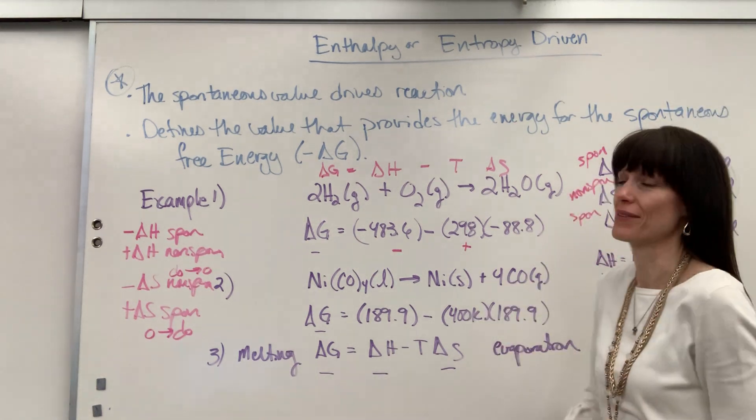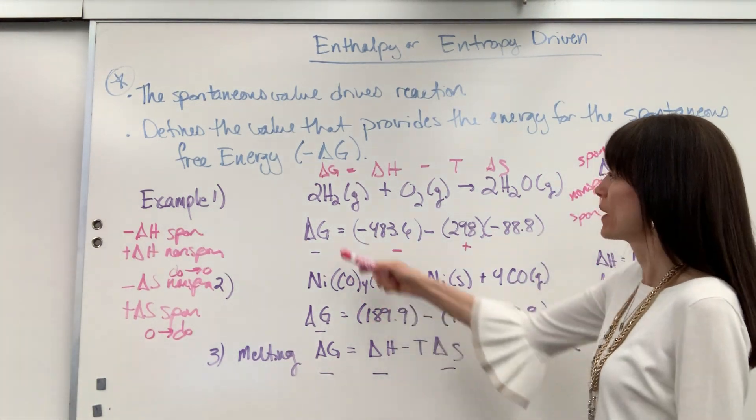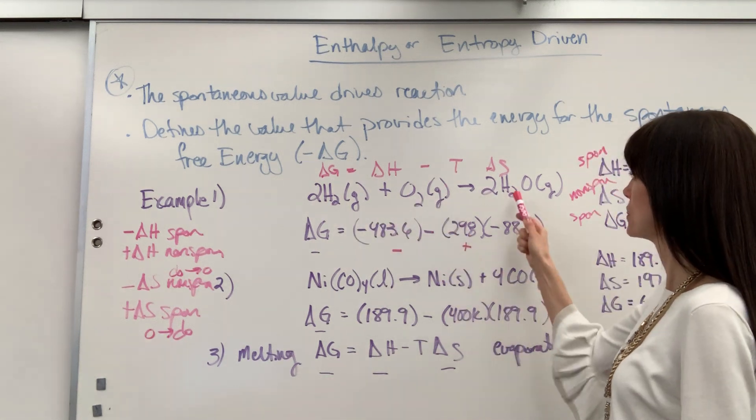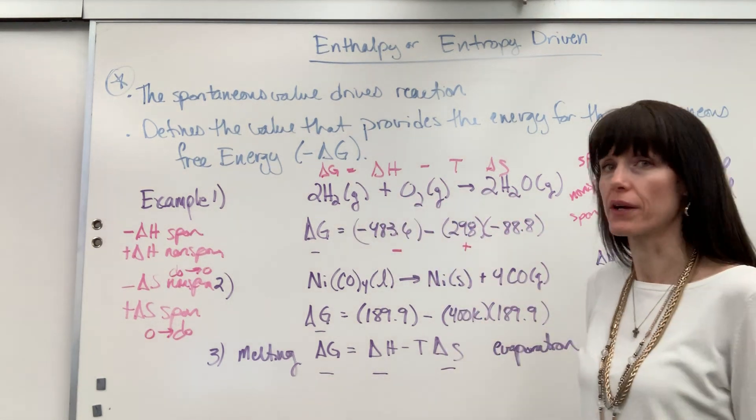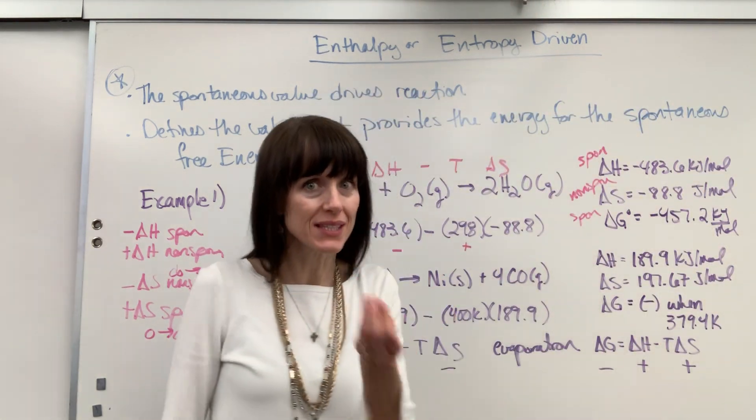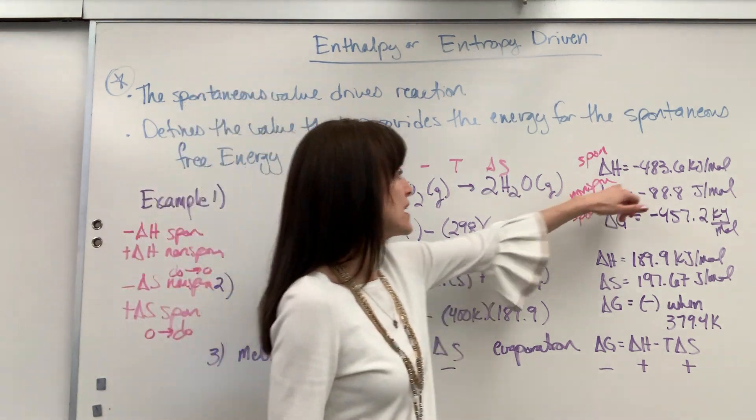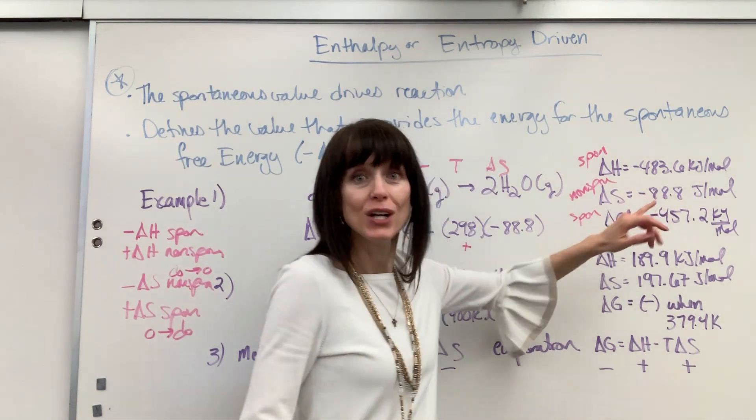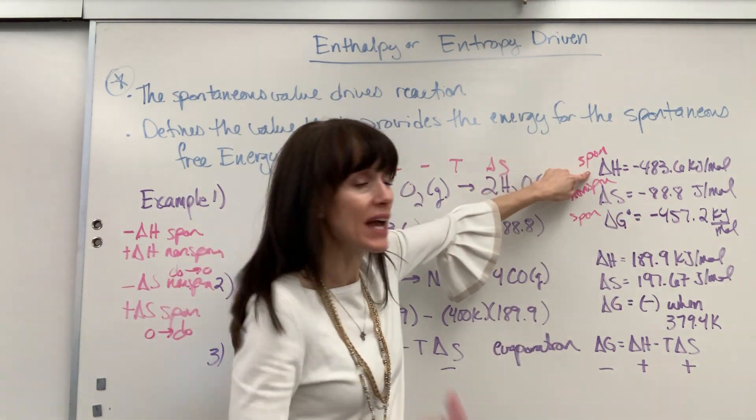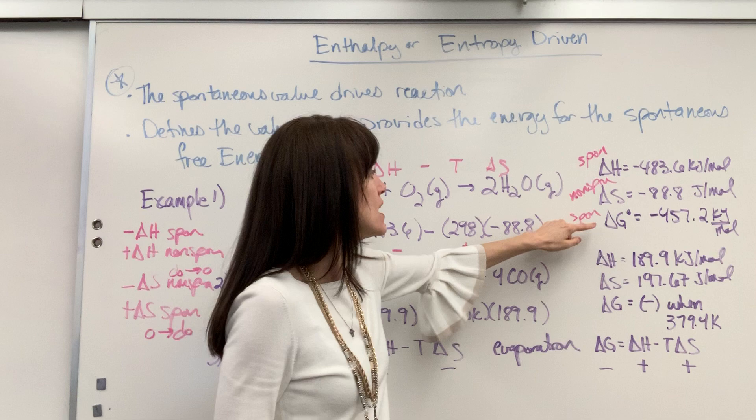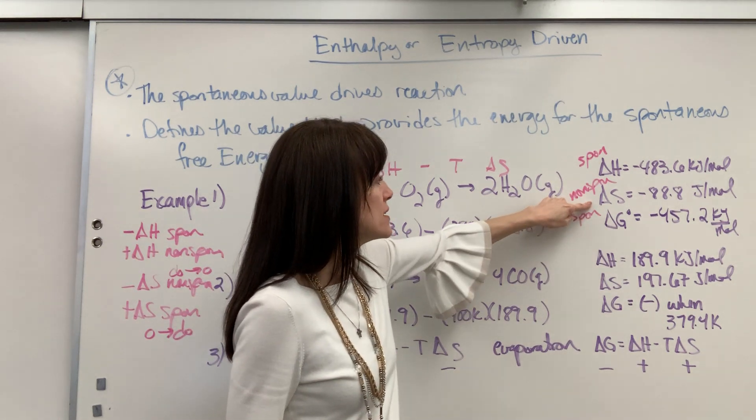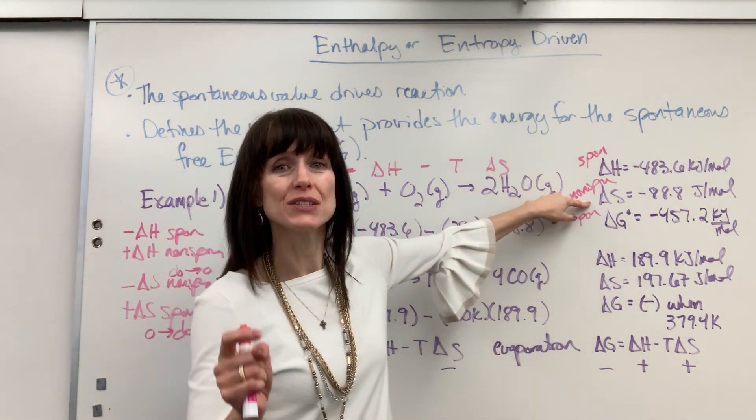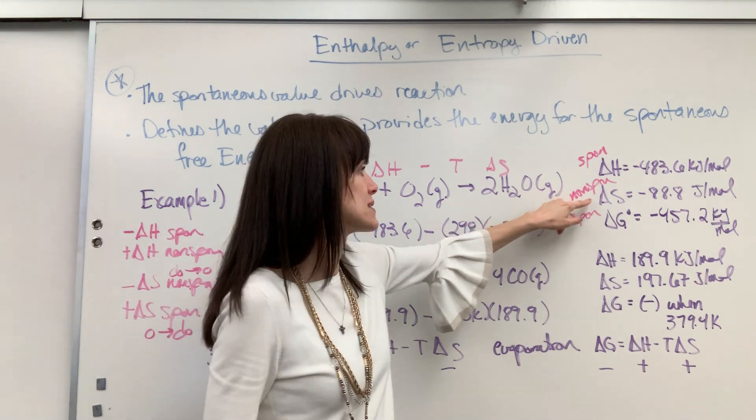Okay, so here we have a couple of examples for you. We have our hydrogen plus oxygen is water. This is just a formation of water. And I put it down in value so you can see this explicitly. Delta H is a negative 483. Delta S, negative 88.8. So notice, negative delta H exothermic, spontaneous.